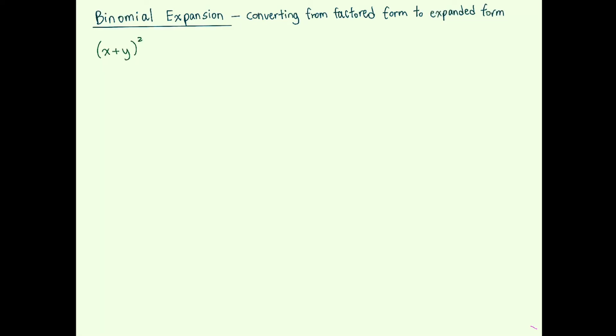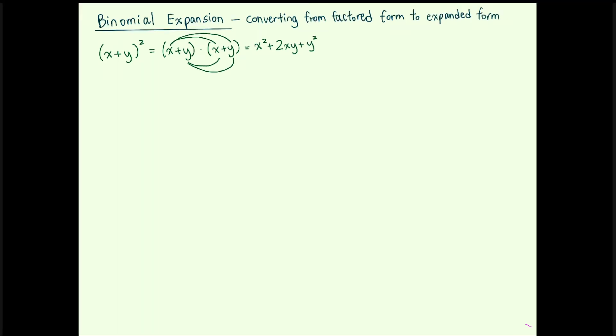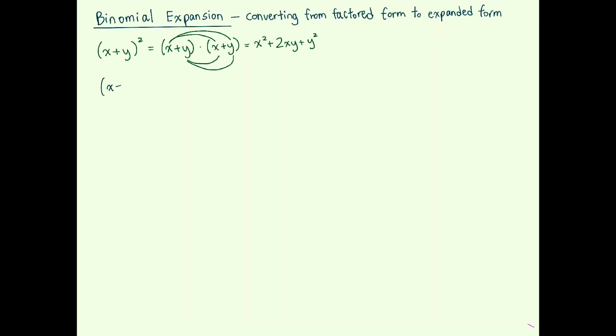Let's start with a simple example, x plus y in parentheses squared. Most people use the FOIL method to expand it, which is multiplying the first, outer, inner, and last terms and adding them together to get x squared plus 2xy plus y squared.